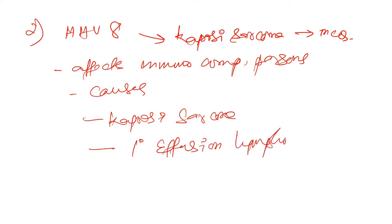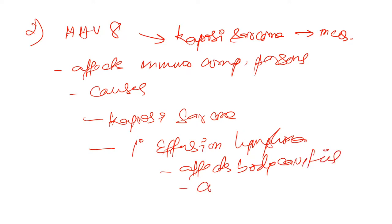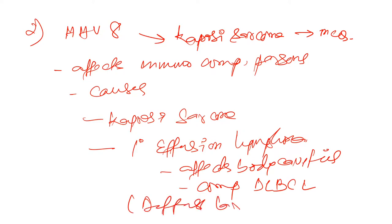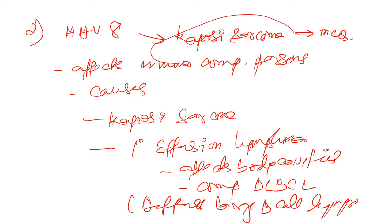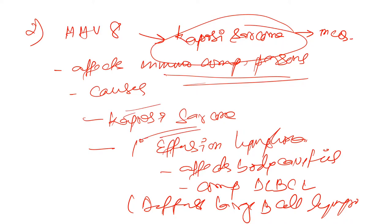Primary effusion lymphoma affects the body cavities and is a component of DLBCL — diffuse large B cell lymphoma. So for Human Herpes Virus 8: it causes Kaposi sarcoma in immunocompromised persons, and also causes primary effusion lymphoma.